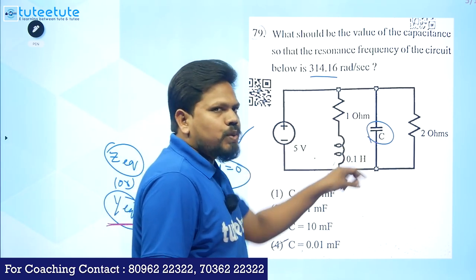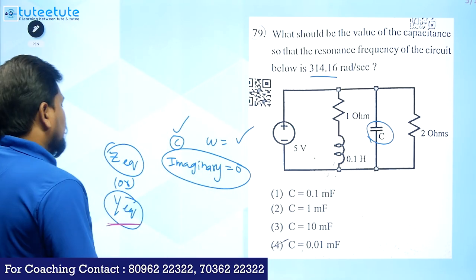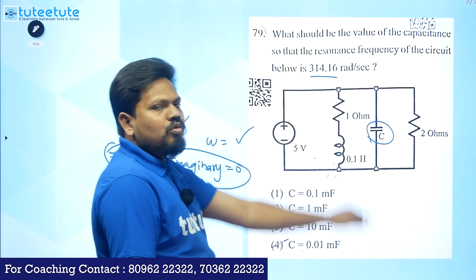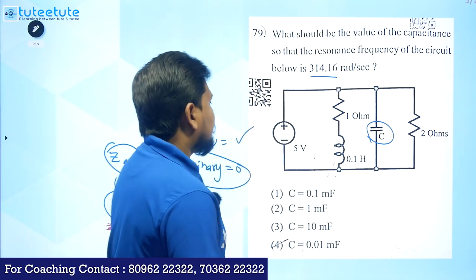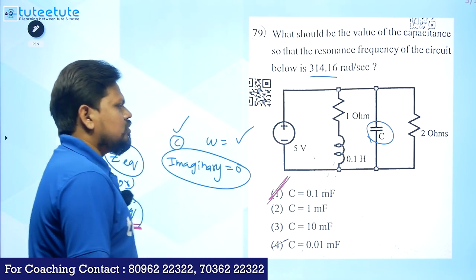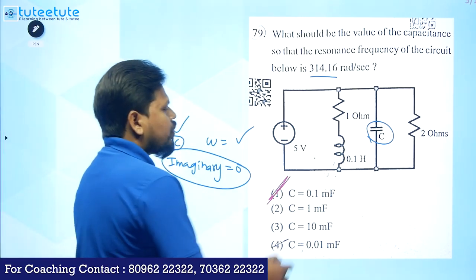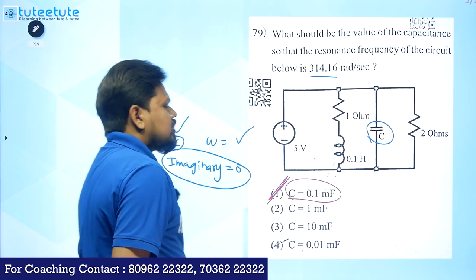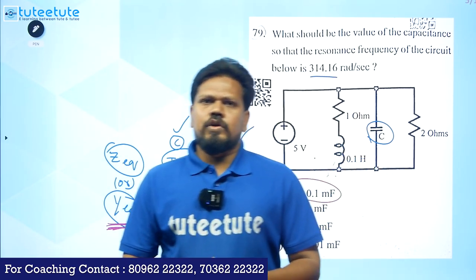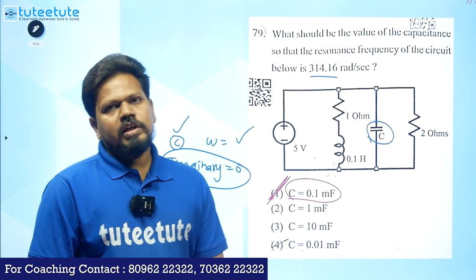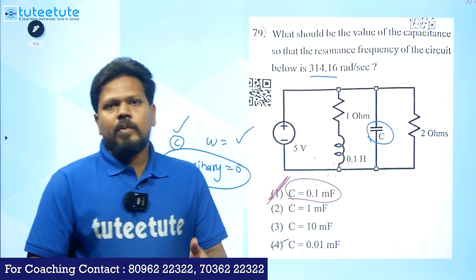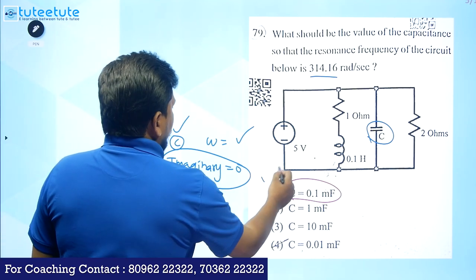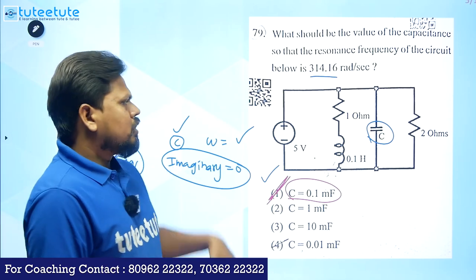Calculate the sum of admittances: Y1 + Y2 + Y3. Substitute the given ω value and solve for C. You will get approximately C = 0.1 millifarads (approximately 0.15 mF). This type of question wastes time in the exam, so if possible, skip and return to it at the end.